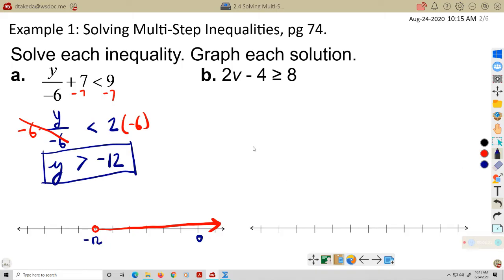Let's take a look at example B. 2V minus four is greater than or equal to eight. So I'm going to add four to both sides as my first step. That's why we call these multi-step equations, because I've got more than one step I have to do here. So that leaves me 2V on the left, and that's going to be greater than or equal to 12.